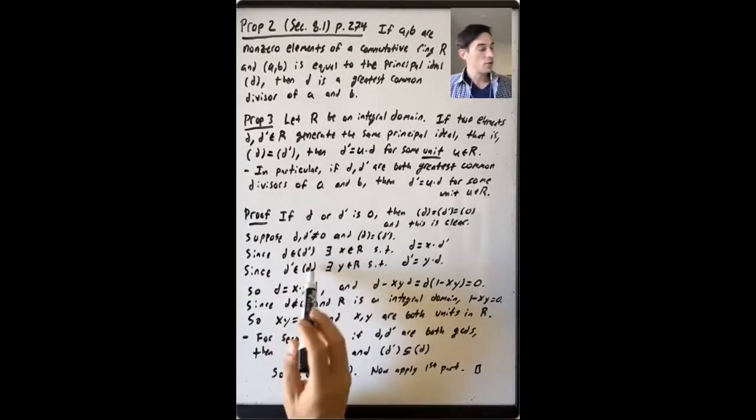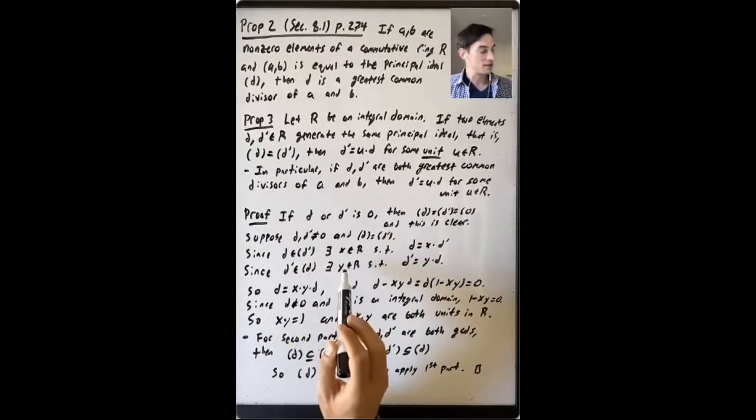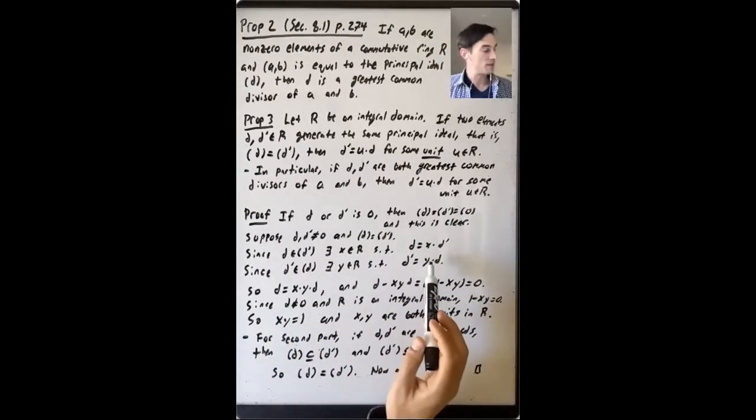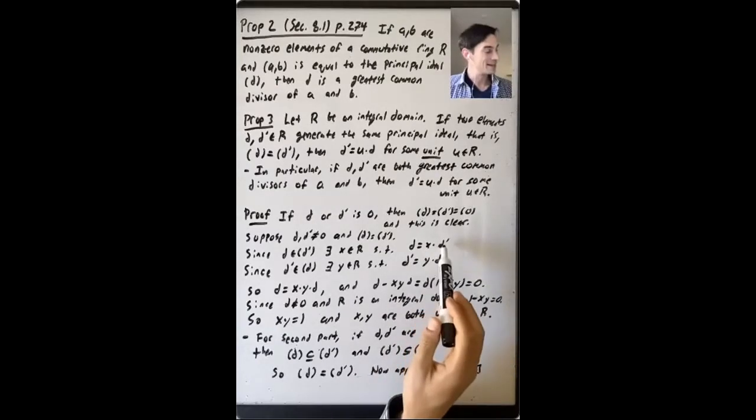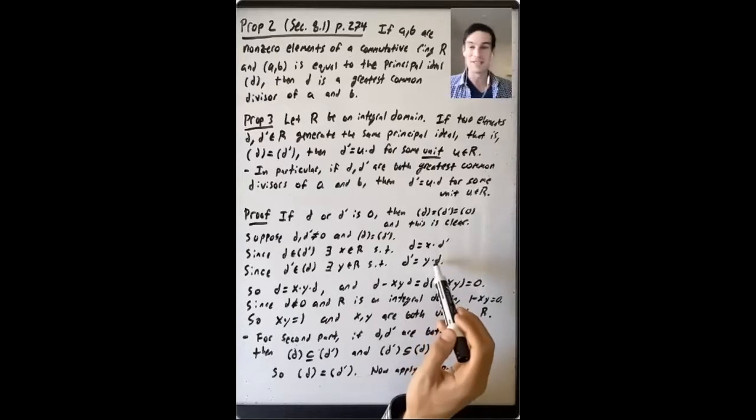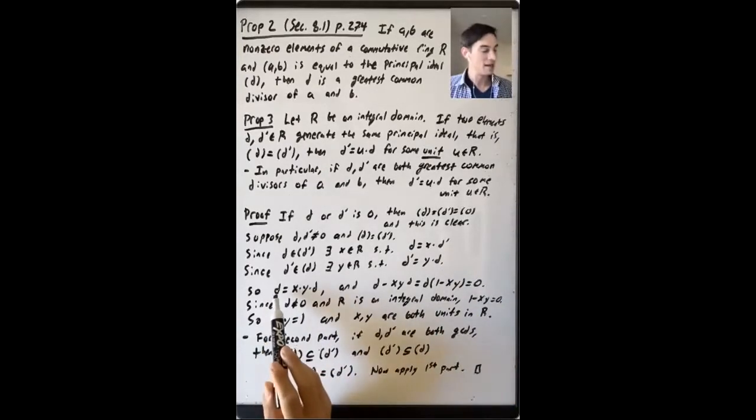So the other way, since D' is in the ideal generated by D, that means that there exists a Y in R such that D' is equal to Y times D. And now, the idea is just replace this D' here with Y times D. And what does that say? That means D is equal to X times Y times D.